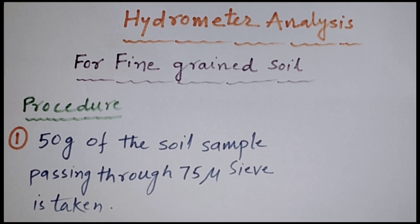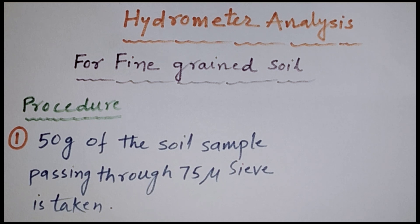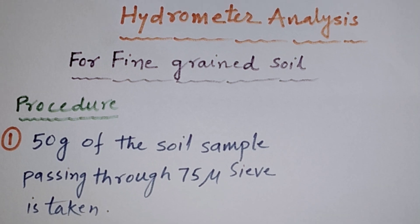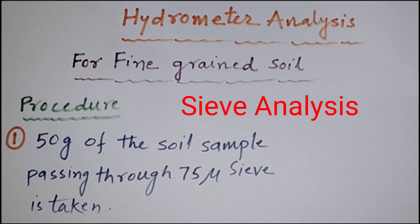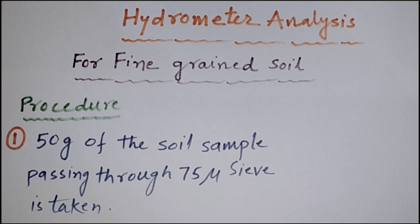This analysis is based on Stokes law, according to which the velocities of free fall of spherical fine particles through a liquid are different for different sizes. The procedure for this test is a little bit difficult as compared to sieve analysis. Sieve analysis was done for coarse grain soil. In the last video I have already explained the detailed procedure of sieve analysis, so I would suggest you first watch that video. I will share the link in the description.